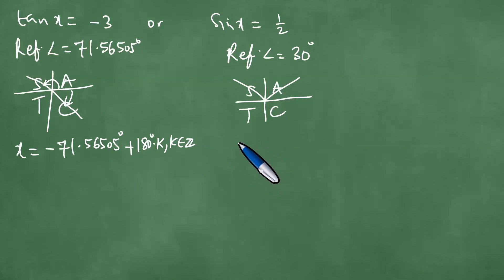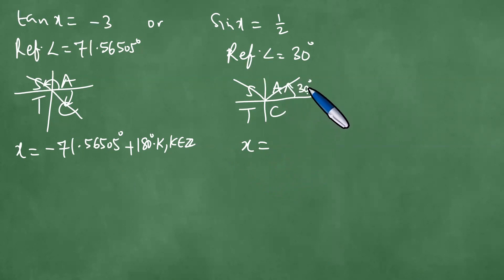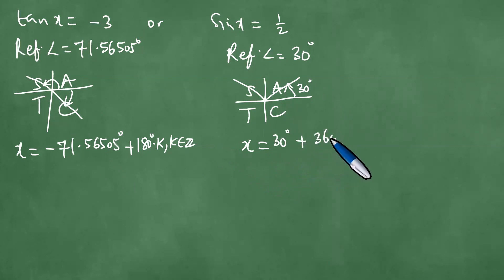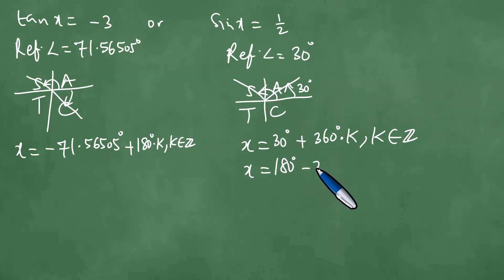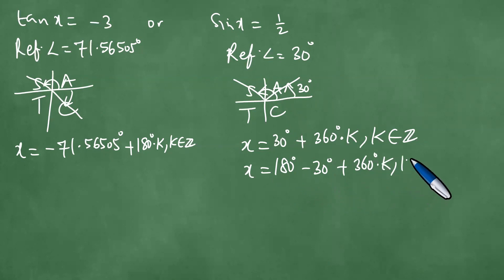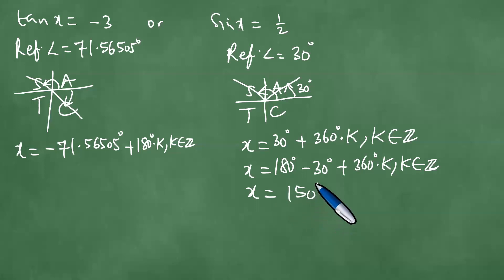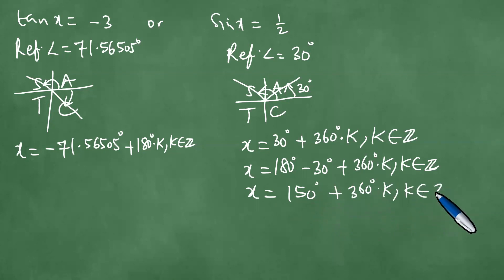For sin(x) = 1/2, in the first quadrant the angle is 30 degrees, so x = 30 degrees plus 360 degrees times k, where k is an element of integers. We also have the second quadrant solution: x = 180 degrees minus 30 degrees plus 360 degrees times k, which gives x = 150 degrees plus 360 degrees times k.